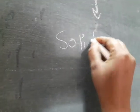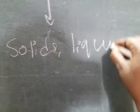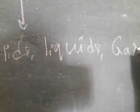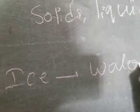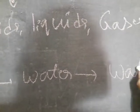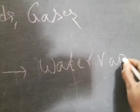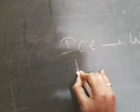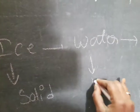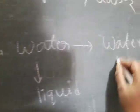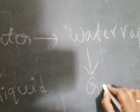You know what the states of matter are: Solids, Liquids, and Gases — these are the three states of matter. We have already studied the three forms of water. Ice is a solid state, water is a liquid state, and water vapor is a gaseous state.